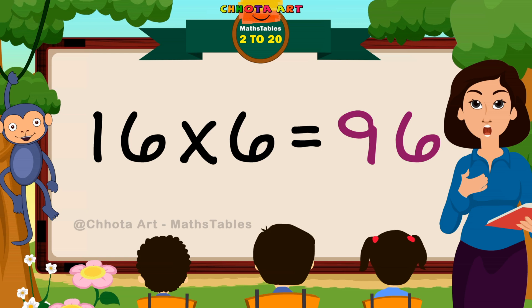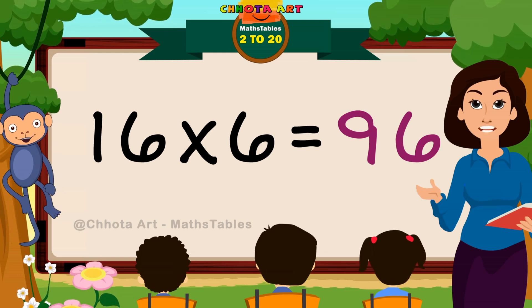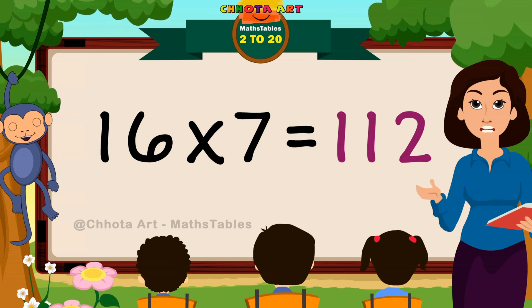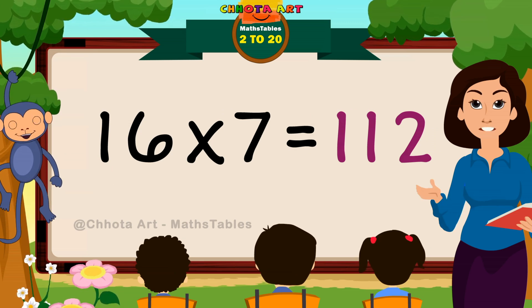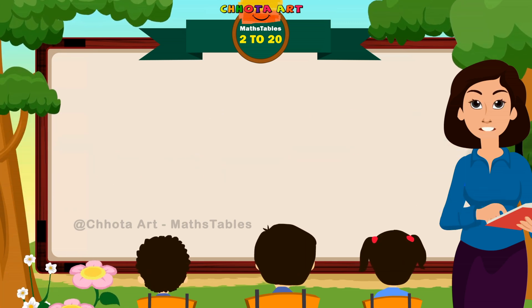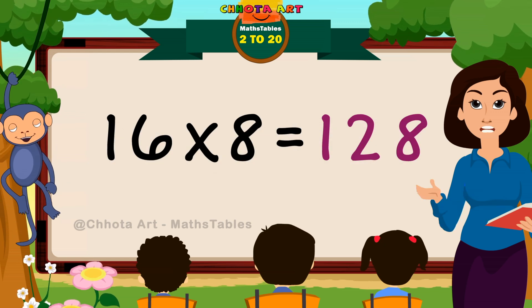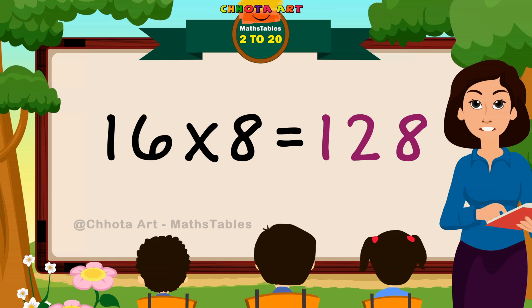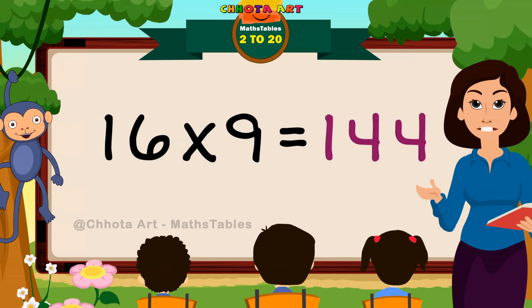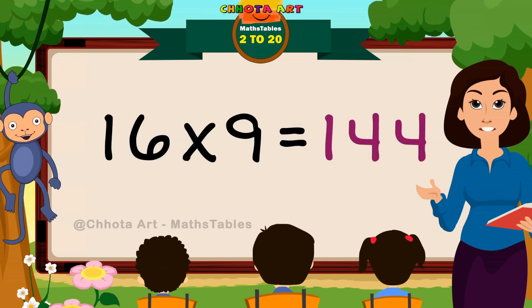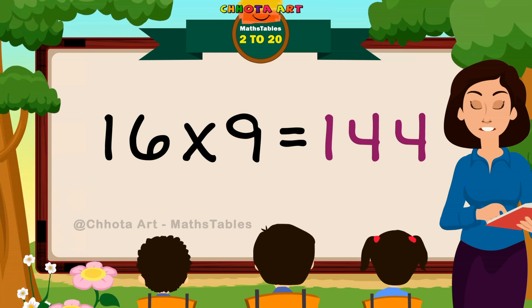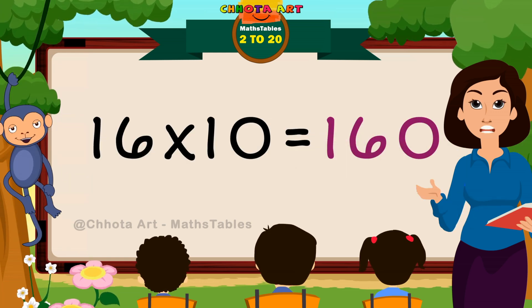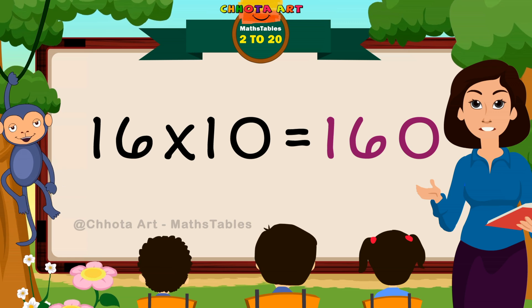16 sixes are 96. 16 sevens are 112. 16 eights are 128. 16 nines are 144. 16 tens are 160.